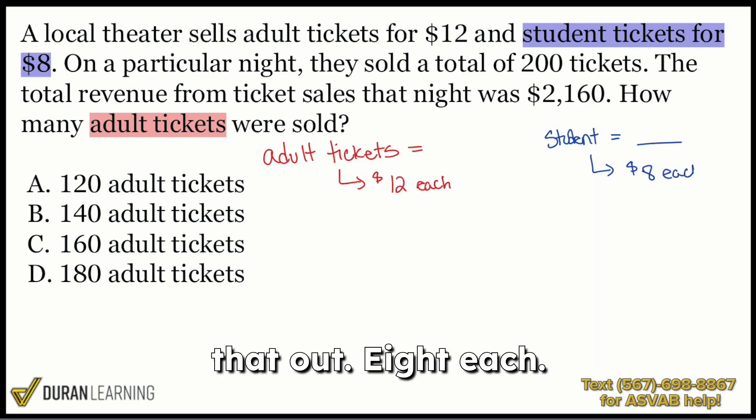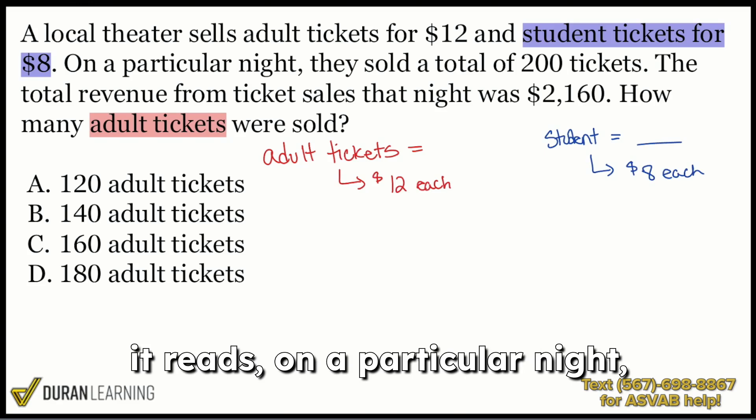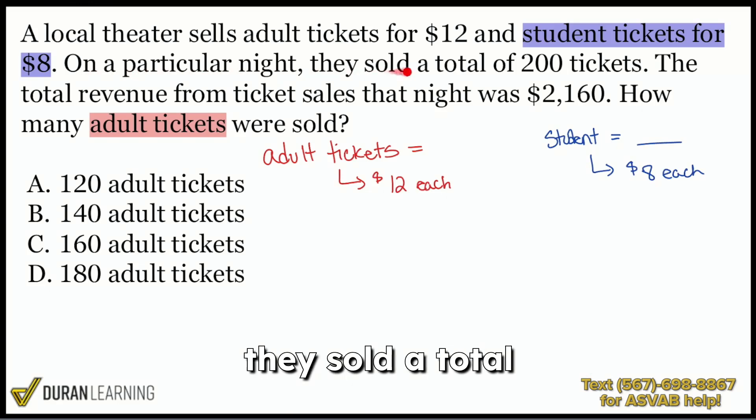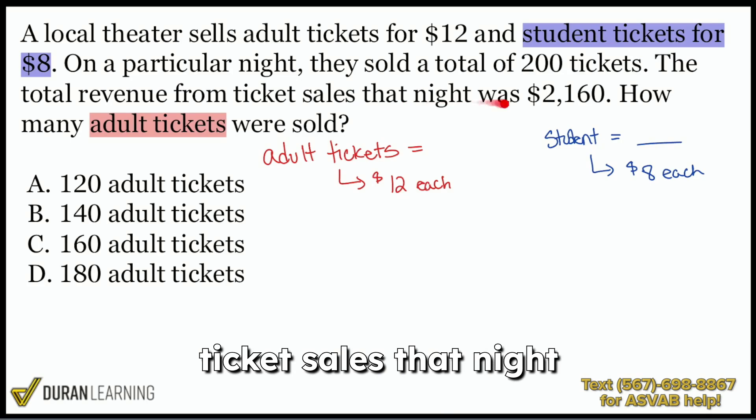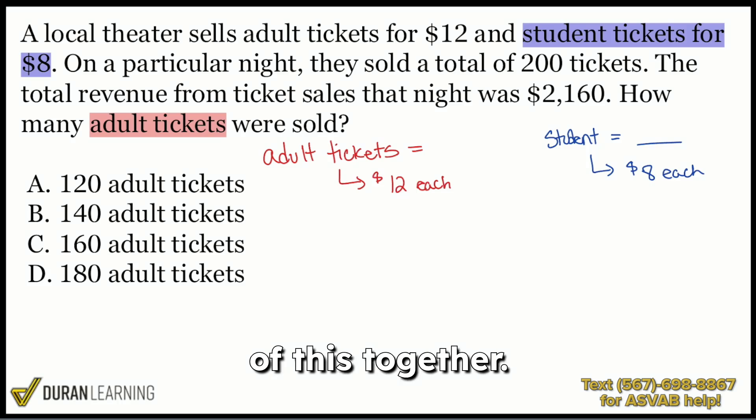All right, now up next, it reads, on a particular night, they sold a total of 200 tickets. And then the total revenue from ticket sales that night was $2,160. So think about all of this together. What are we doing here? What are we looking at?